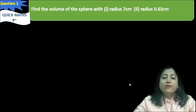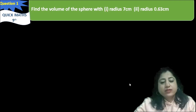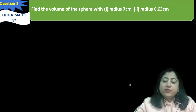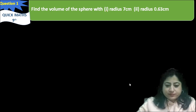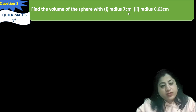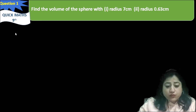Hello everyone, I am Richa Gaur from Quick Maths. Today we will start Exercise 13.8 of Chapter: Surface Area and Volume. Question number one: find the volume of a sphere with radius 7 centimeters and radius 0.63 centimeters. But first of all, we should know what is the volume of a sphere.